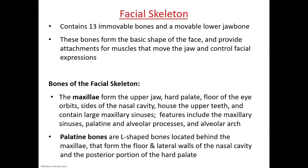The facial skeleton contains 13 immovable bones plus one movable bone. The movable bone is the jaw. These bones give your face its basic shape and structure — if you were injured in this area or had surgery such as changing your nasal bone, your face would look different. These bones also provide attachment sites for muscles responsible for all your facial movements.